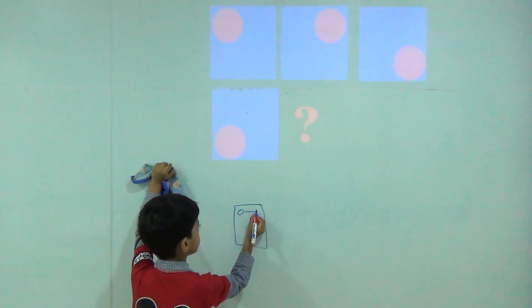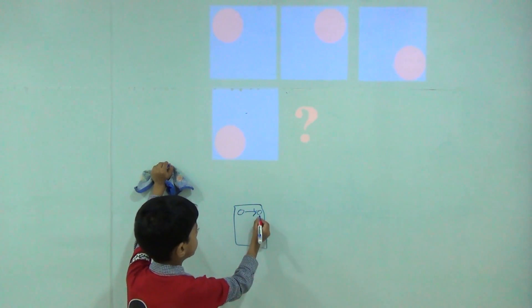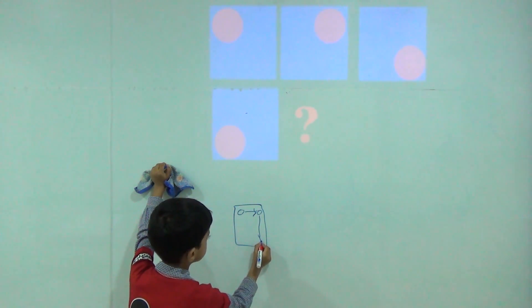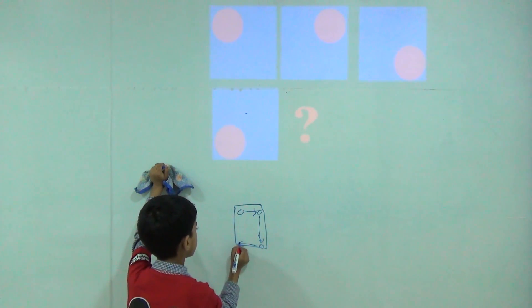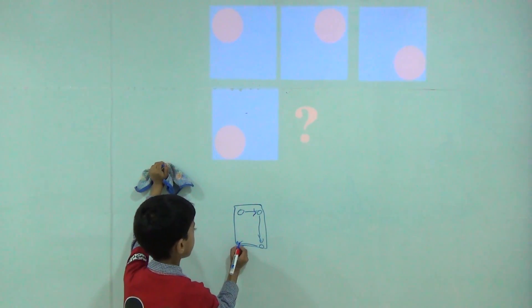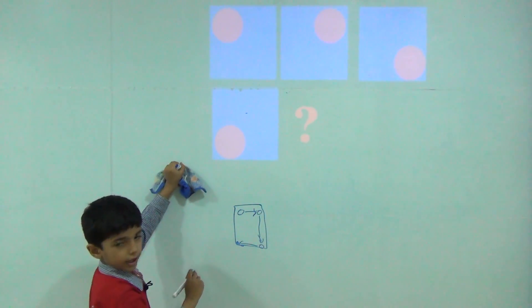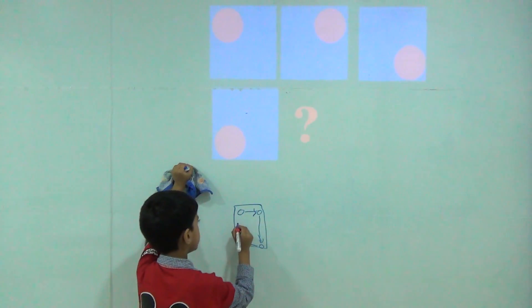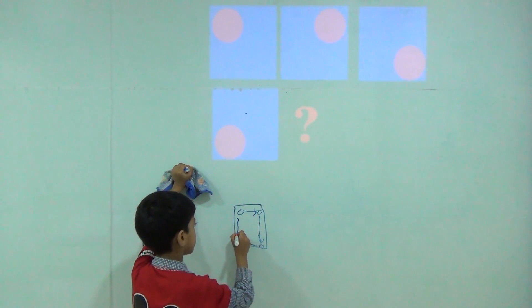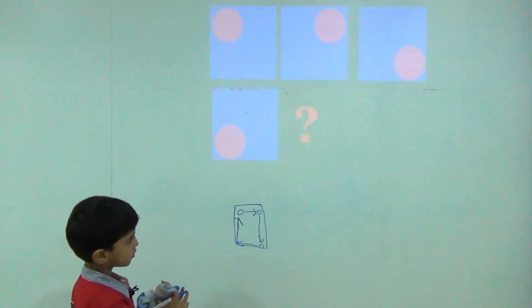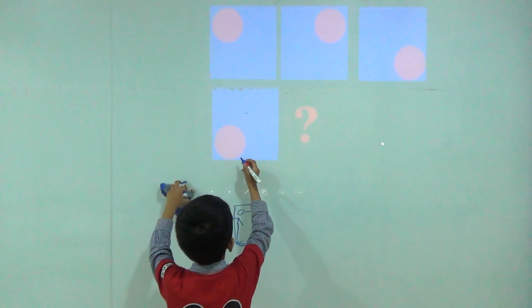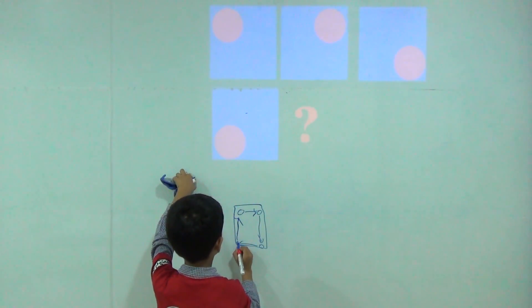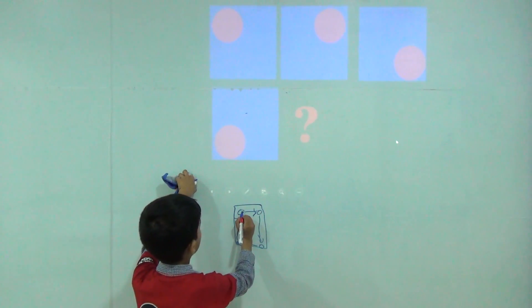This is moving clockwise. Circle is here, then goes here, then comes down, then goes right side, left side, then goes up, so it will go upside.